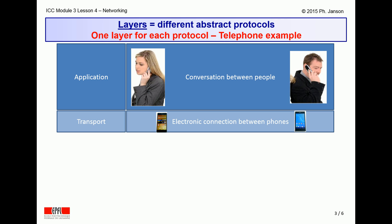The telephone conversation between Alice and Bob does not travel directly between them. Each of them has to have a telephone set, and there has to be a telephone connection between the two devices to carry the conversation electronically between them. In other words, there is a system for transporting the application layer conversation protocol between the two telephone sets of Alice and Bob. The same is true in computer networks, where there is also a so-called transport protocol between computers to carry information between the applications running on those computers.